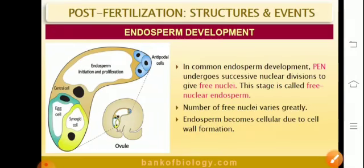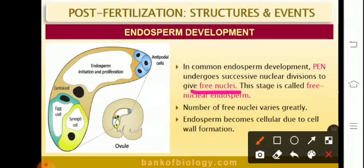The nuclear endosperm is found in dicotyledons, where there is free nuclear division of the nucleus of the PEN, forming a multi-nucleated endosperm. Later, cytokinesis takes place so that multi-nucleated endosperm formation occurs. This type of endosperm formation is observed in angiosperms. For example, the milky fluid found in green coconut is an example of nuclear endosperm.